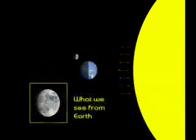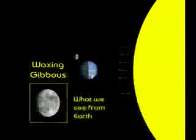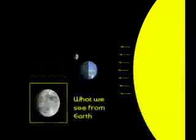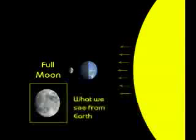Then comes the Waxing Gibbous phase. Gibbous means humped. Then comes the Full Moon. This means the Moon is halfway around the Earth.